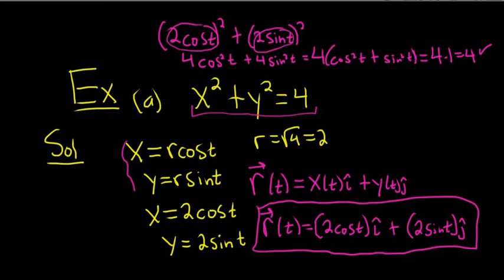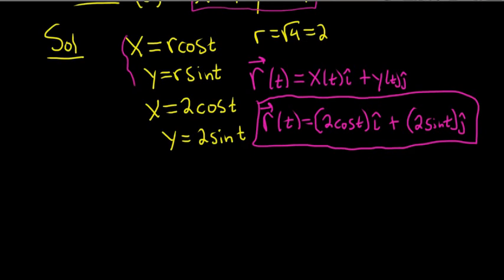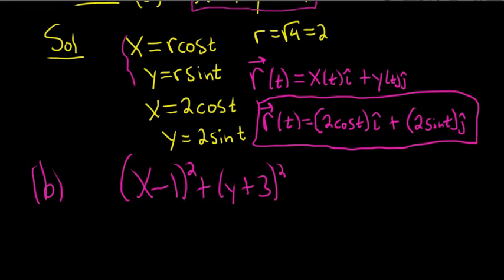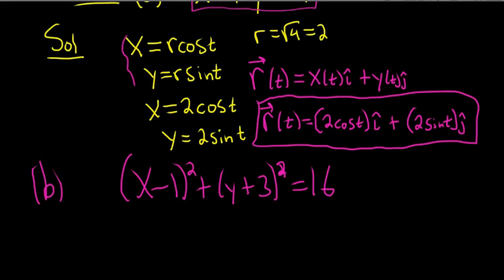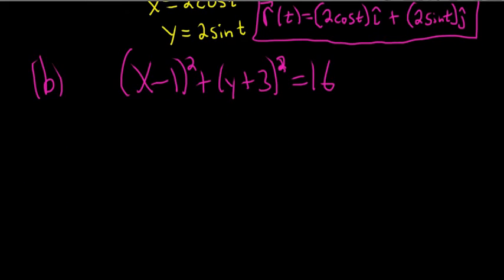Let's do one more, but let's change the center. So I'll show you how that works. Part b, let's do x minus 1 quantity squared plus y plus 3 quantity squared equals 16. So we have another circle this time. So the center here is 1, negative 3, that's what the center is here. So the center is 1, negative 3, and the radius here is the square root of 16, so it's 4.